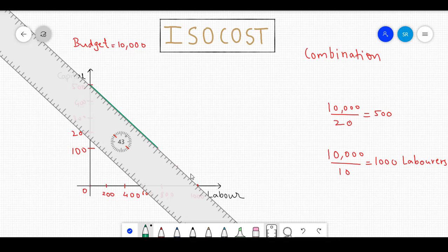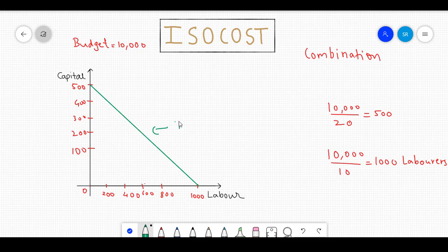When you join these points, you get a downward sloping curve. This curve is called the ISO cost curve. As you can see, the ISO cost showcases the different combinations of factor inputs that cost the same to the producer. All these points show combinations of capital and labour, and all the combinations cost Rs.10,000 to the producer.